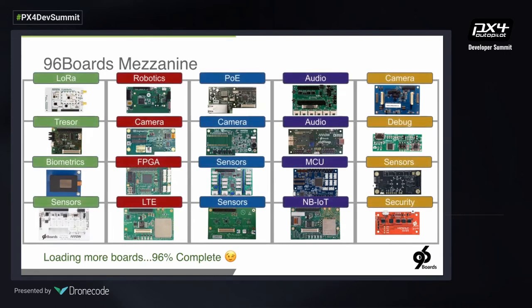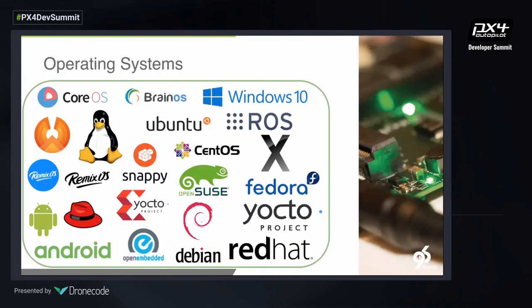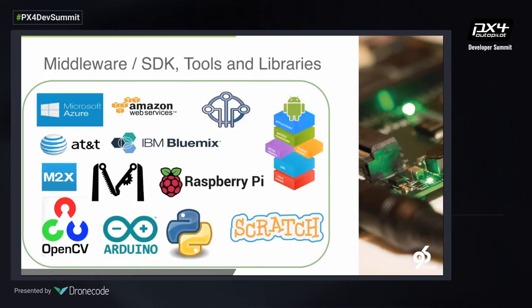The mezzanine ecosystem covers everything from LoRa to robotics, audio, NB-IoT, security, and LTE — there will be some that fit your development needs. On the operating system side, 96Boards is very widely supported by different types of mainstream operating systems — some more niche ones as well. If you go on to openSUSE, Fedora, and similar OS websites, you will probably find a dedicated section for a range of 96Boards. We have spent quite a bit of effort supporting the cross-community, which we believe is very important for 96Boards developers.